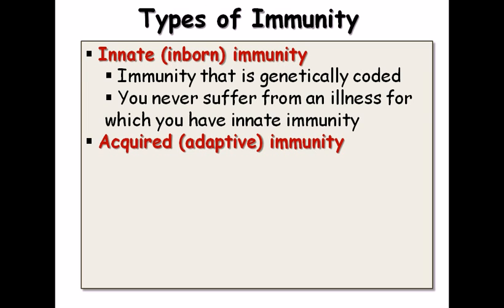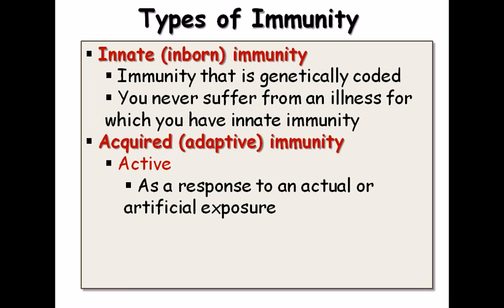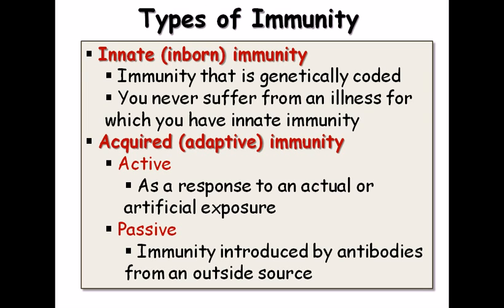With innate immunity, you never suffer from an illness you have innate immunity against — that's the basic concept. Acquired immunity can be of two types: active and passive. Active immunity is acquired as a response to an actual or artificial exposure. Passive immunity is immunity introduced by antibodies from an outside source.